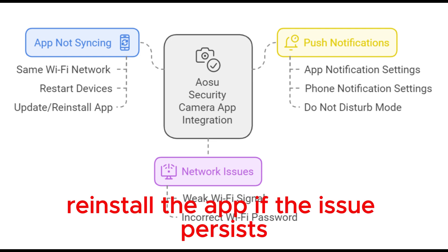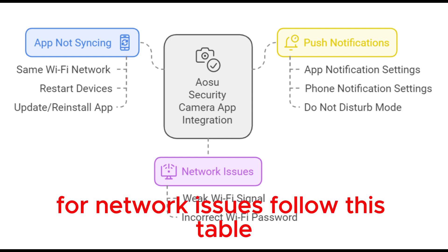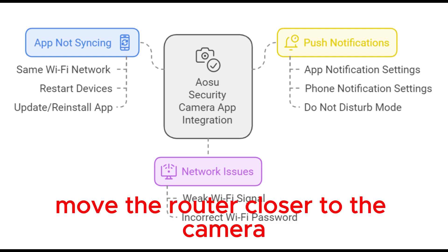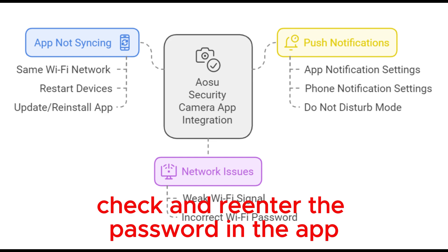Reinstall the app if the issue persists. For network issues, follow this table. Issue: Weak Wi-Fi Signal — Solution: Move the router closer to the camera. Issue: Incorrect Wi-Fi password — Solution: Check and re-enter the password in the app.